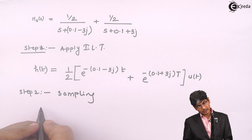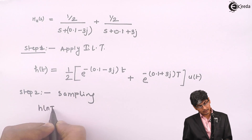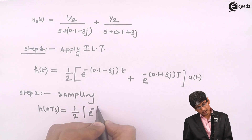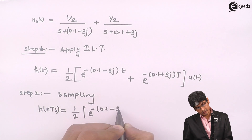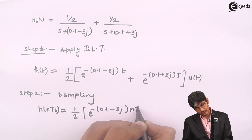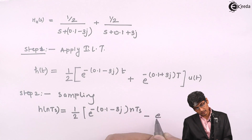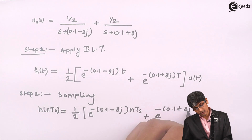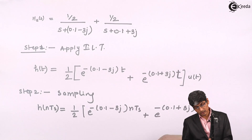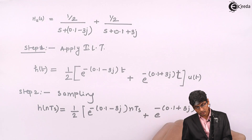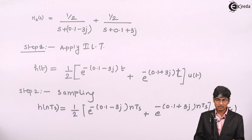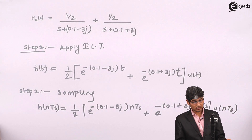With sampling, H of NTs equals (1/2) times [e^(−(0.1−3J)·NTs) plus e^(−(0.1+3J)·NTs)] times U of NTs. That is how we have received H of NTs.